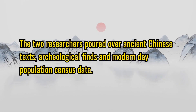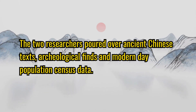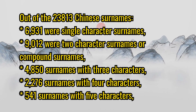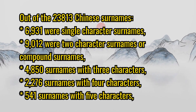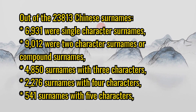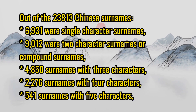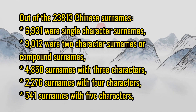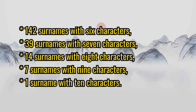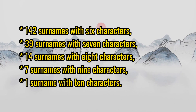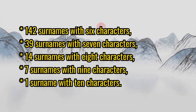The two researchers pored over ancient Chinese texts, archaeological finds, and modern-day population census data. Out of the 23,813 Chinese surnames: 6,931 were single-character surnames; 9,012 were two-character (compound) surnames; 4,850 had three characters; 2,276 had four characters; 541 had five characters; 142 had six characters; 39 had seven characters; 14 had eight characters; 7 had nine characters; and 1 surname had 10 characters.